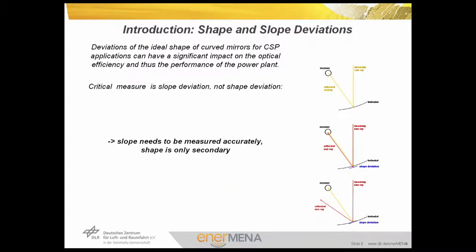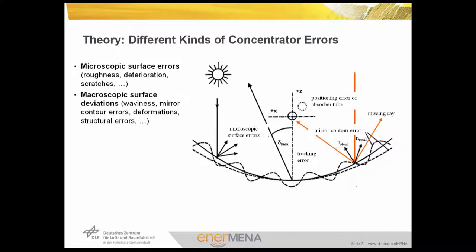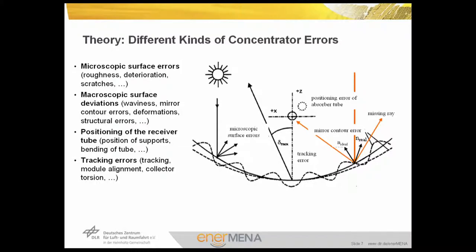As a consequence, we need to measure slope deviations because shape deviations are only secondary. There are different kinds of concentrator errors. There can be microscopic surface errors caused by the roughness of the mirror — for example, metal concentrators have in general a lower surface quality than glass mirrors. There may also be macroscopic surface deviations: waviness, mirror contour errors, deformations, and structure errors. Another source is the positioning of the receiver tube in a parabolic trough not exactly matching the focal line, as well as bending and deformation of the tube. Tracking error and module alignment — where not all modules point in the same direction — are also covered, as are torques from friction and wind load leading to torsion of the collector.